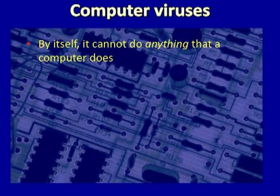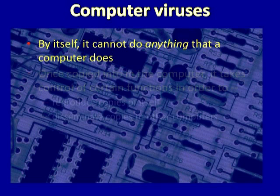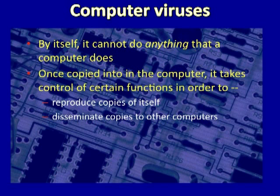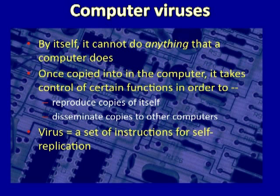You can understand human viruses by thinking about computer viruses. Computer viruses are simply a series of command lines in a program. By themselves, they can do nothing that a computer can do. But once copied into your computer, the virus can take control of certain functions, reproduces copies of itself in various places on your hard disk, and then disseminates copies to other computers. So a virus is really just a set of instructions for self-replication.